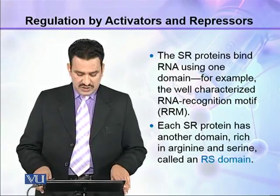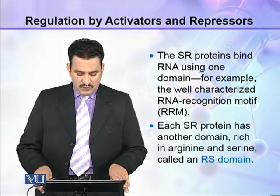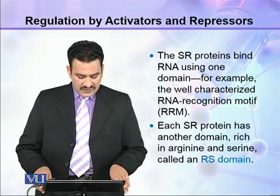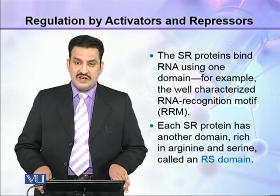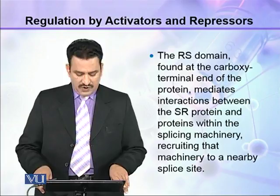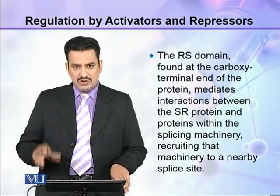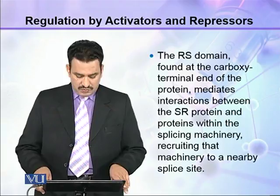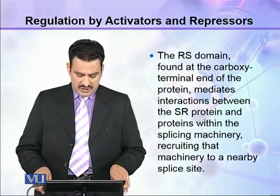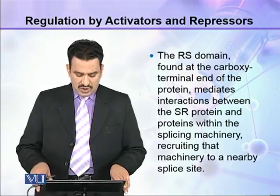The SR proteins bind RNA using a domain — for example, the well-characterized RNA recognition motif, RRM. Each SR protein has another domain which is rich in arginine and serine, called the RS domain. The RS domain is found at the carboxy terminal of the protein and mediates interactions between the SR protein and the proteins within the splicing machinery, recruiting that machinery to a nearby splice site.